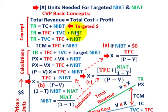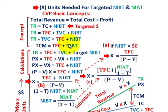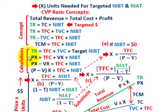Rearranging the equation: total revenues minus total variable cost equals total fixed cost plus net income before taxes. This is the conceptual form for solving cost-volume-profit problems — everything falls around this basic concept.